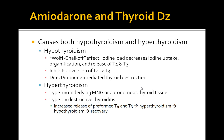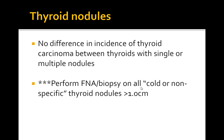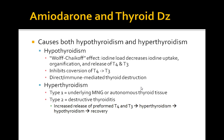Amiodarone-induced hyperthyroidism has two types. Type 1 involves an underlying multinodular goiter or autonomous thyroid tissue. Through the Jod-Basedow effect, an iodine load causes increased synthesis of T4 and T3 in the tissue.